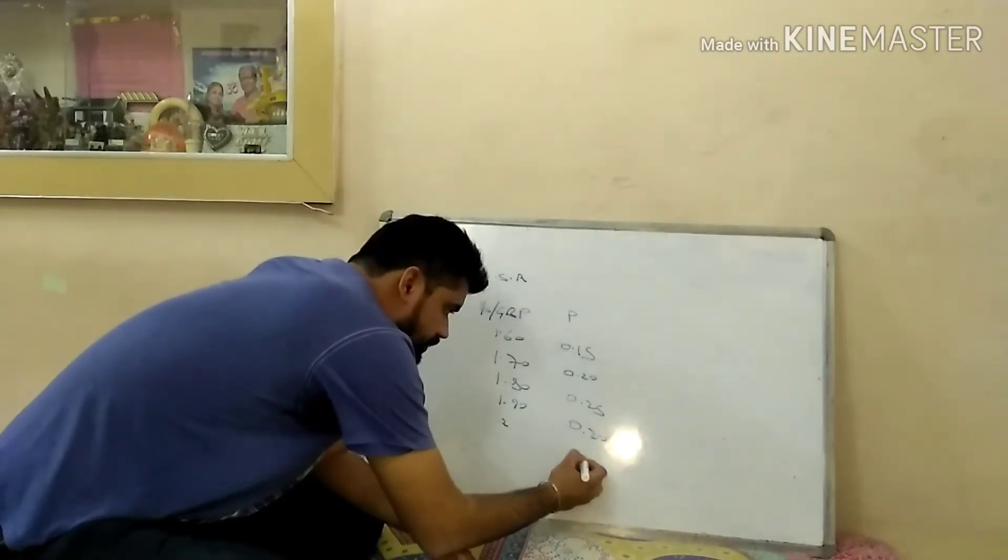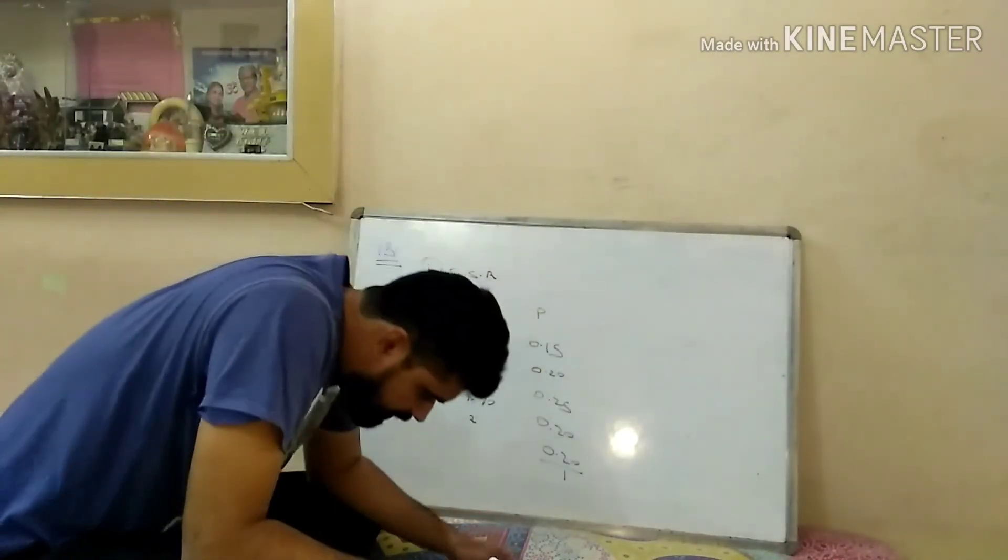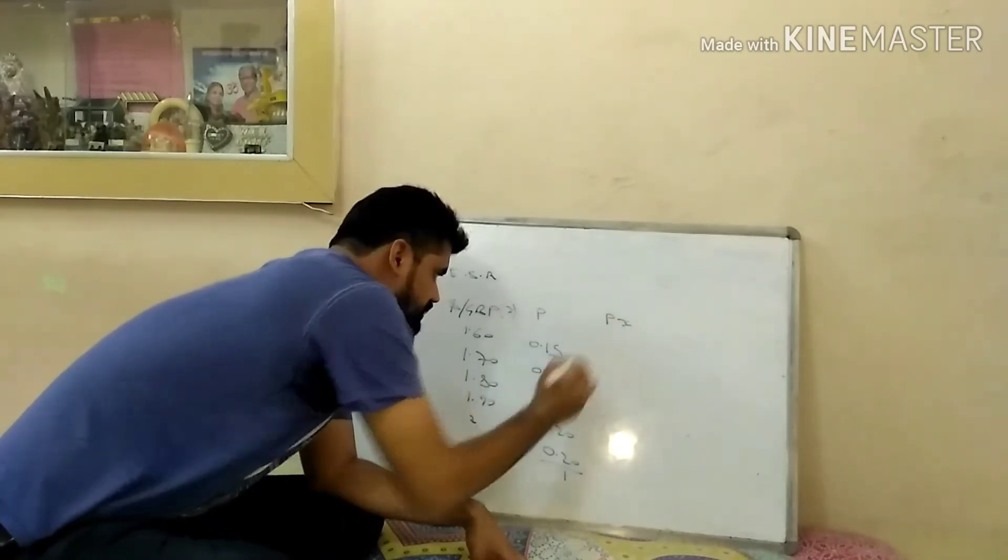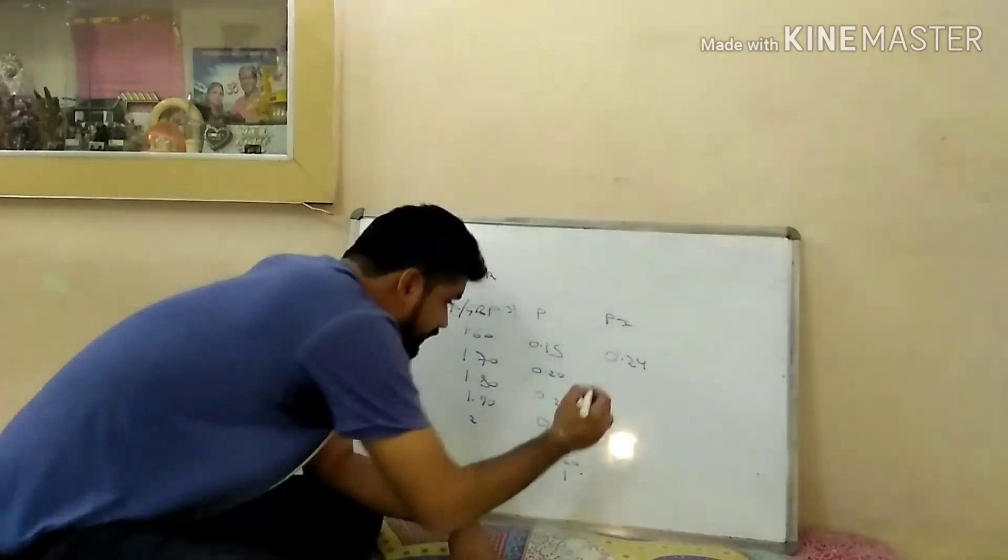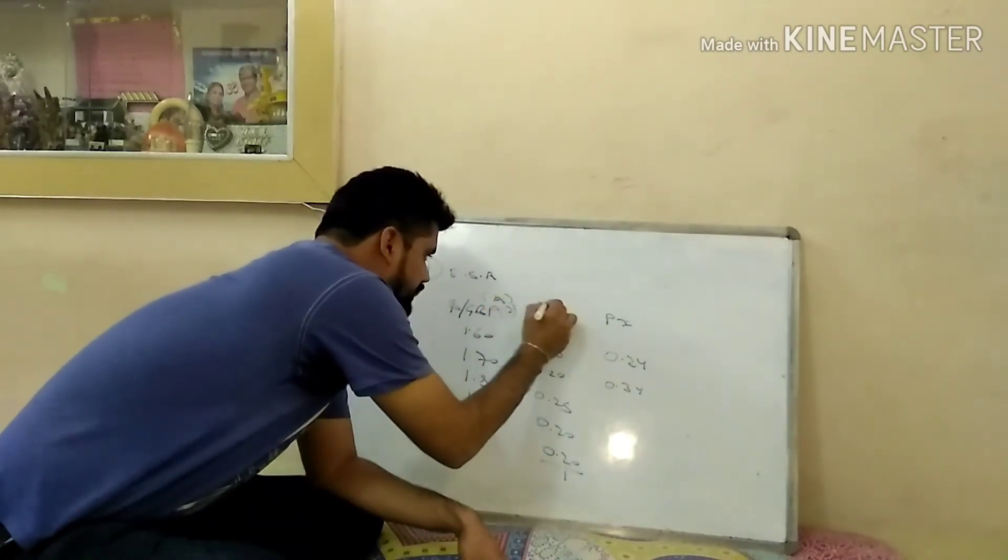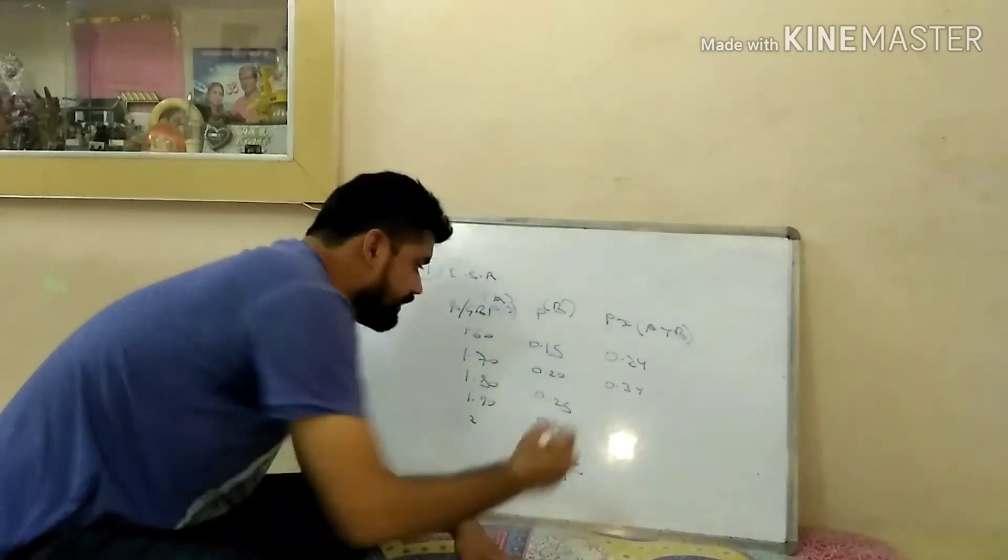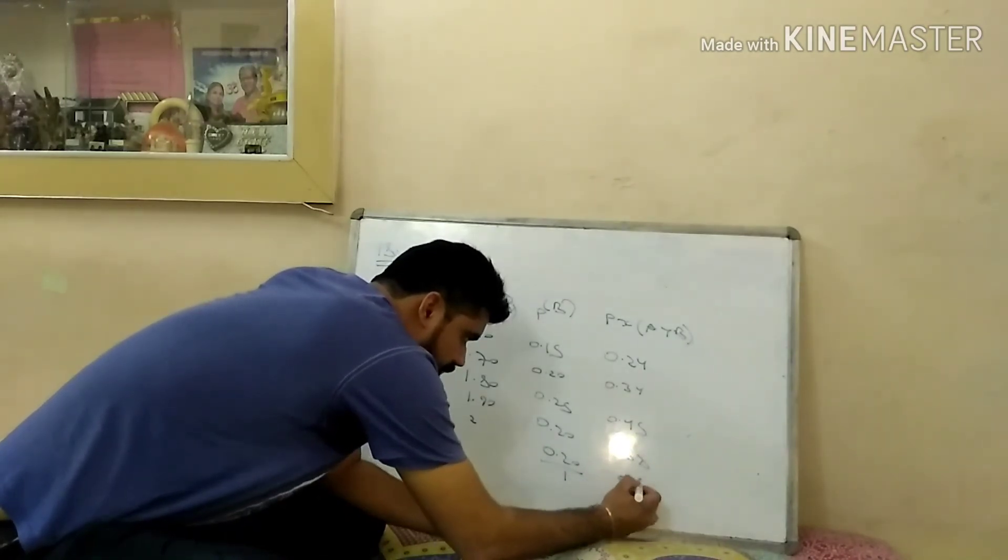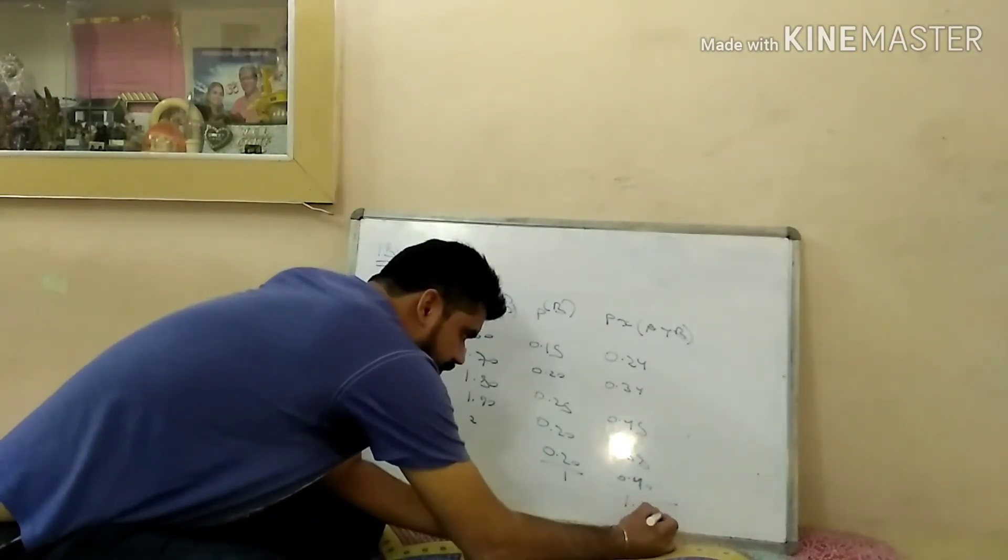Now I will multiply the rates with probability. I will do this Px. First is 0.24, second is 0.34, third is 0.45, fourth is 0.38, and fifth is 0.40. So when you total, you will get the expected spot rate of 1.82. This is simple.